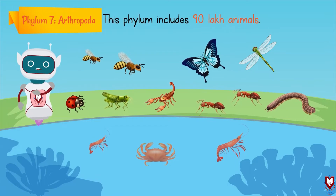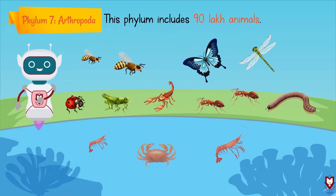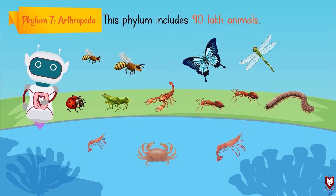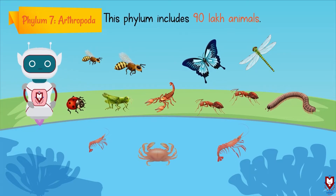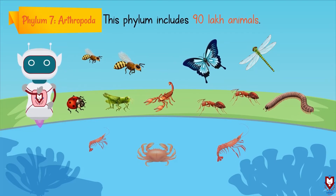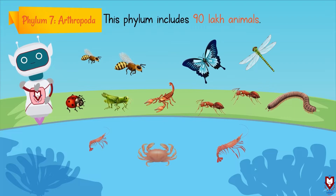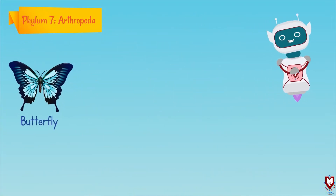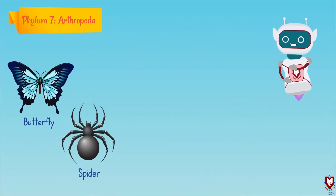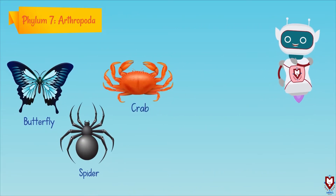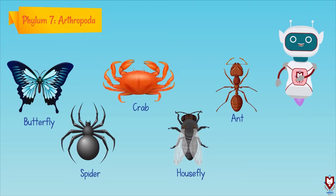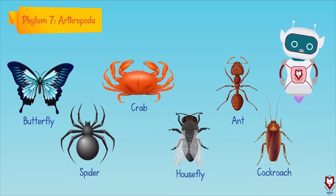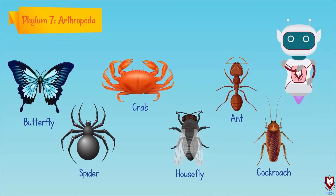These animals can be found in various environments like water and land. Butterflies, spiders, crabs, houseflies, ants, and cockroaches are some examples of this phylum.